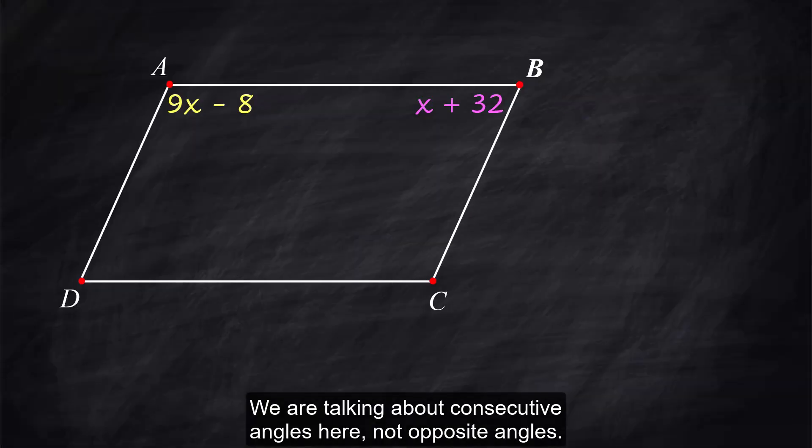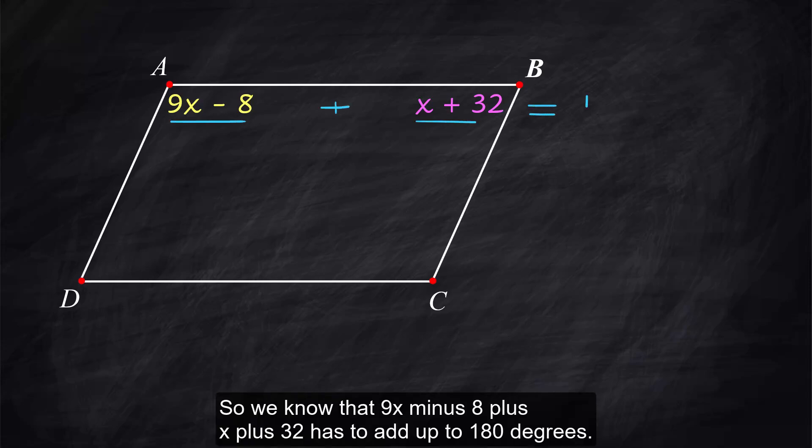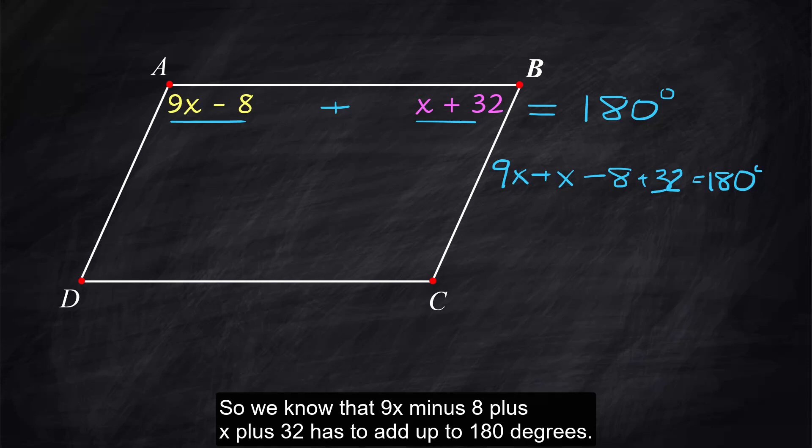We are talking about consecutive angles here not opposite angles so the consecutive angles again are supplementary so we know that 9x minus 8 plus x plus 32 has to add up to 180 degrees. We get x equals 15.6.